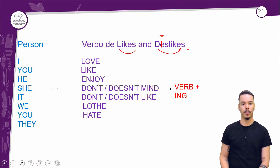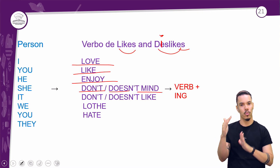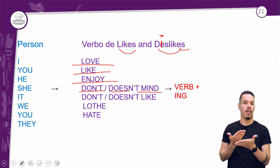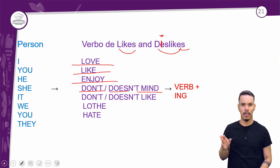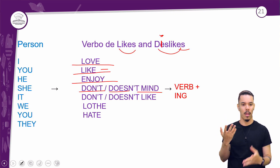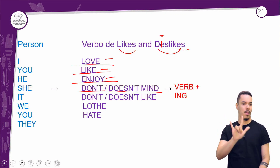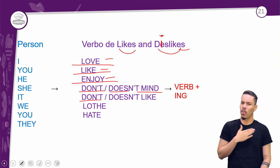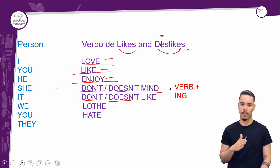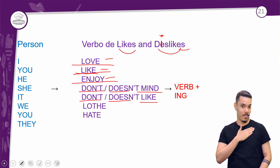Então, olha só. Vimos sobre o love, like, enjoy, don't or doesn't mind — que é você não se importar tanto. O like é curtir, gostar. O love é amar. Enjoy também é curtir, gostar. Don't or doesn't like é o contrário de like, que é não gostar.